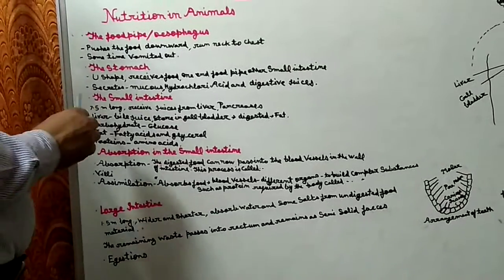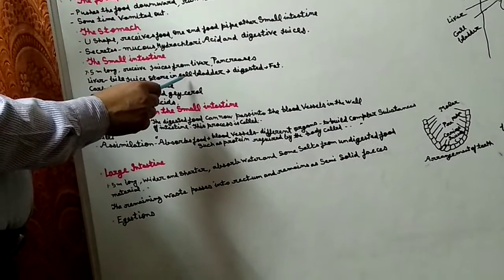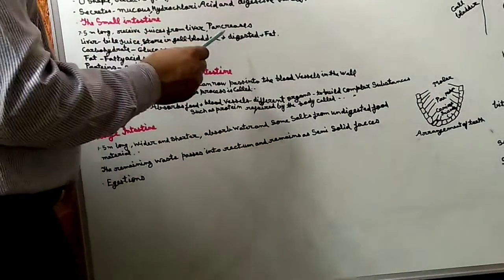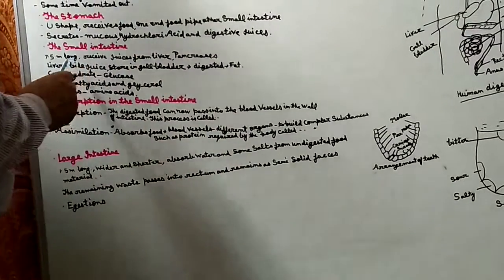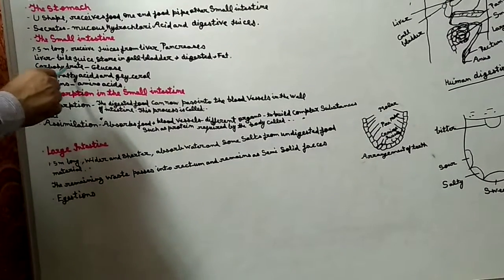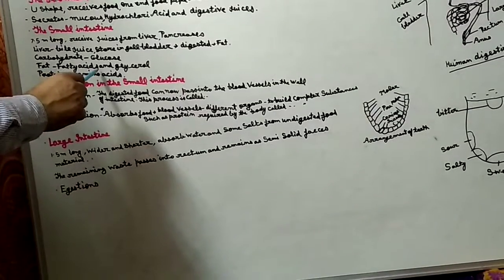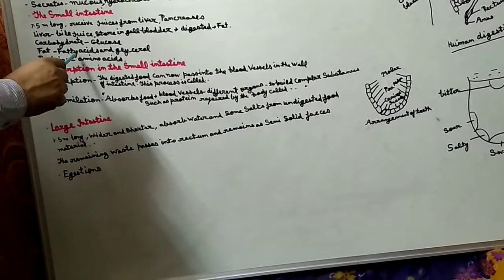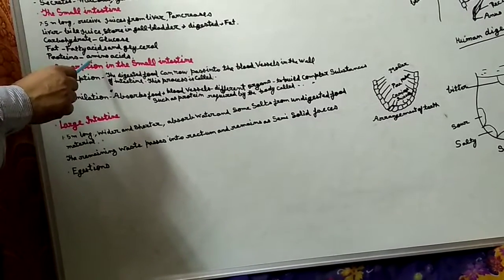Liver kya utpann karta hai - bile juice. Bile juice kahan ikhatta hota hai - small structure gallbladder mein. Aur yeh bile juice food mein fat ko digest karta hai. Jo digestive juices hain, wo carbohydrate ko glucose mein convert karte hain, fat ko fatty acid aur glycerol mein convert karte hain, aur protein ko amino acid mein change karte hain.